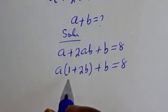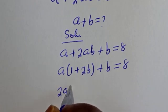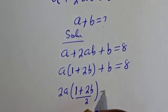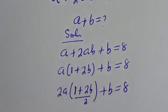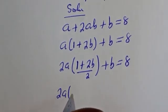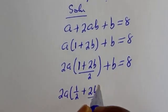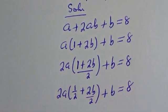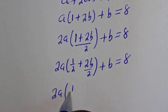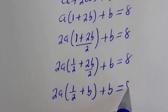Note that if you have 2 divided by 2, that is equal to 1. The left-hand side can be seen as 2A bracket 1 plus 2B over 2 plus B is equal to 8. Then this is 2A bracket 1 over 2 plus 2B over 2 plus B is equal to 8. Then this is 2A bracket 1 over 2 plus B plus B is equal to 8.